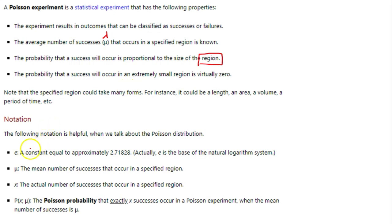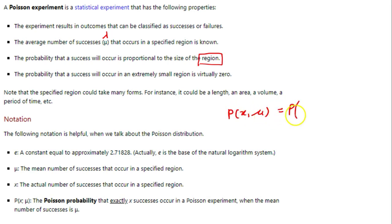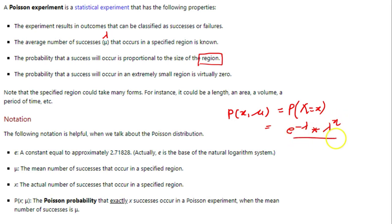We have some notation for the formula. E is a constant with value 2.71828. Then Mu or Lambda is the mean number of successes that occur in a specified region. X is the actual number of successes that occur in a specified region. The formula is: P(x, Mu) = P(x = x), equals E to the power minus Lambda.